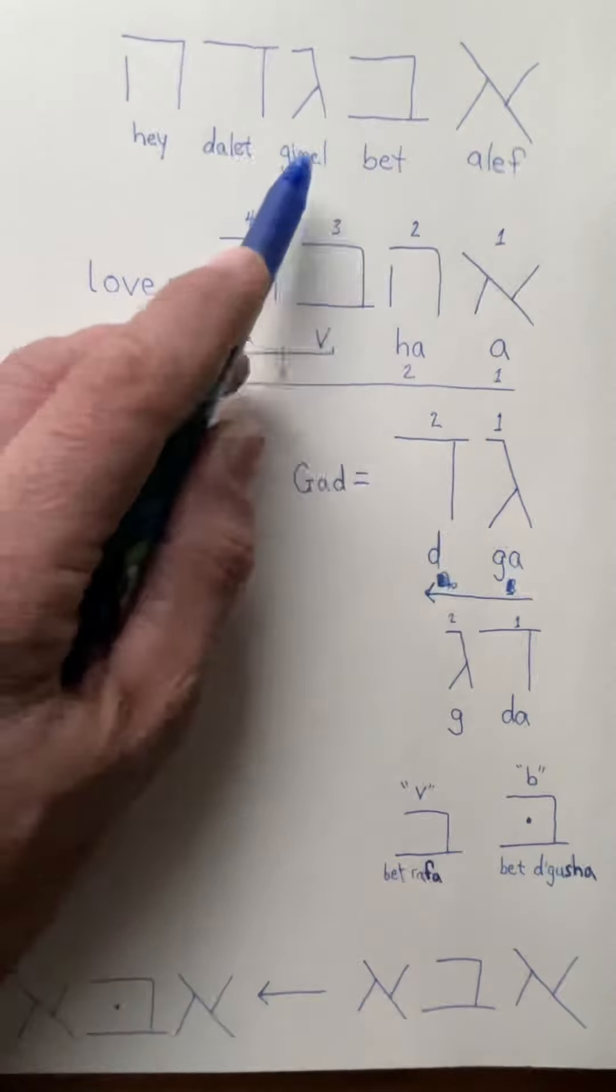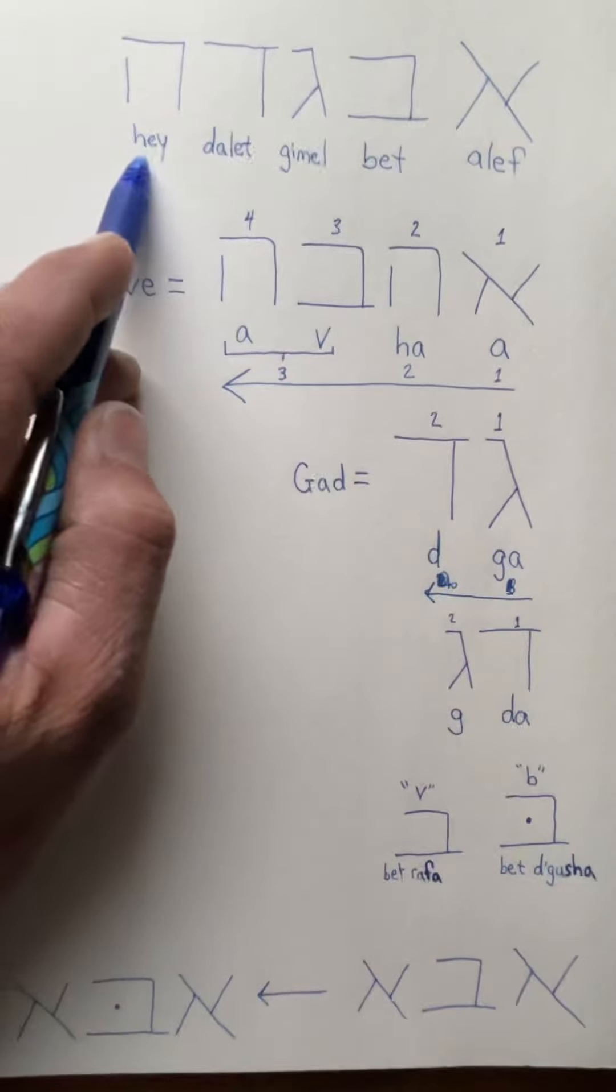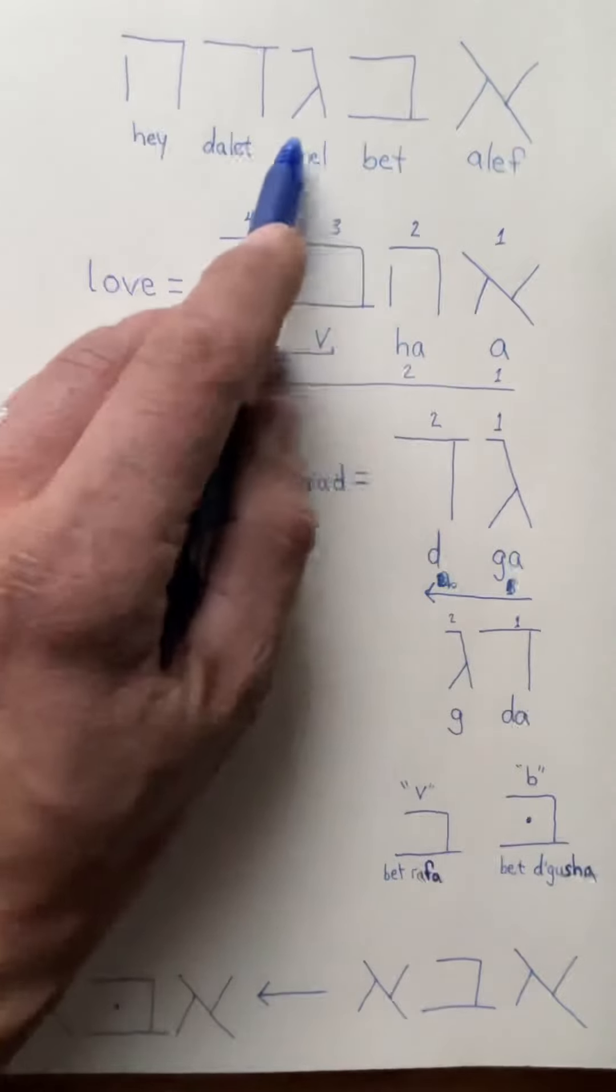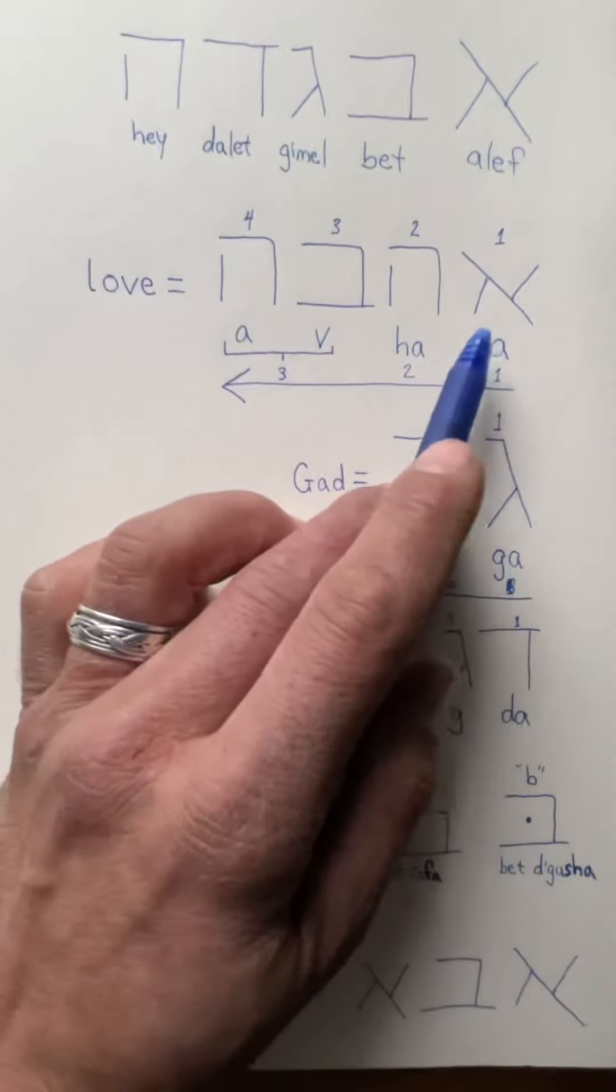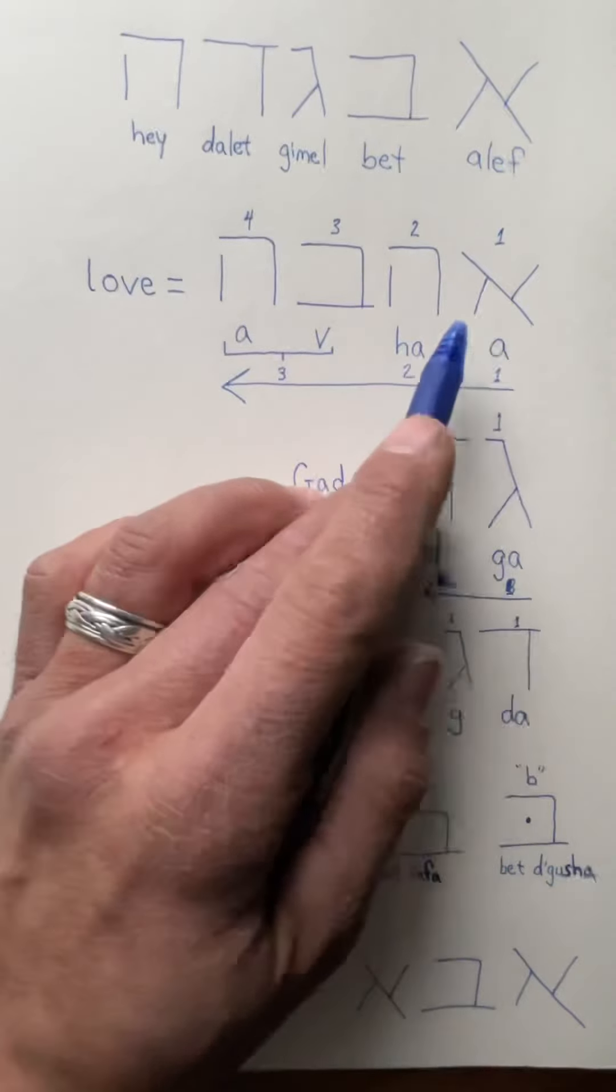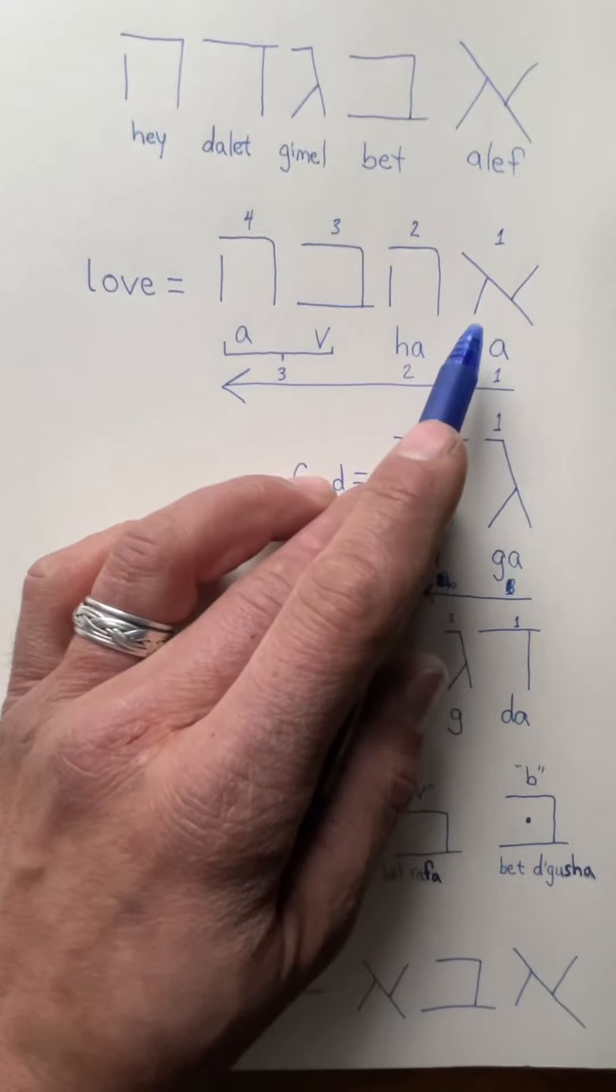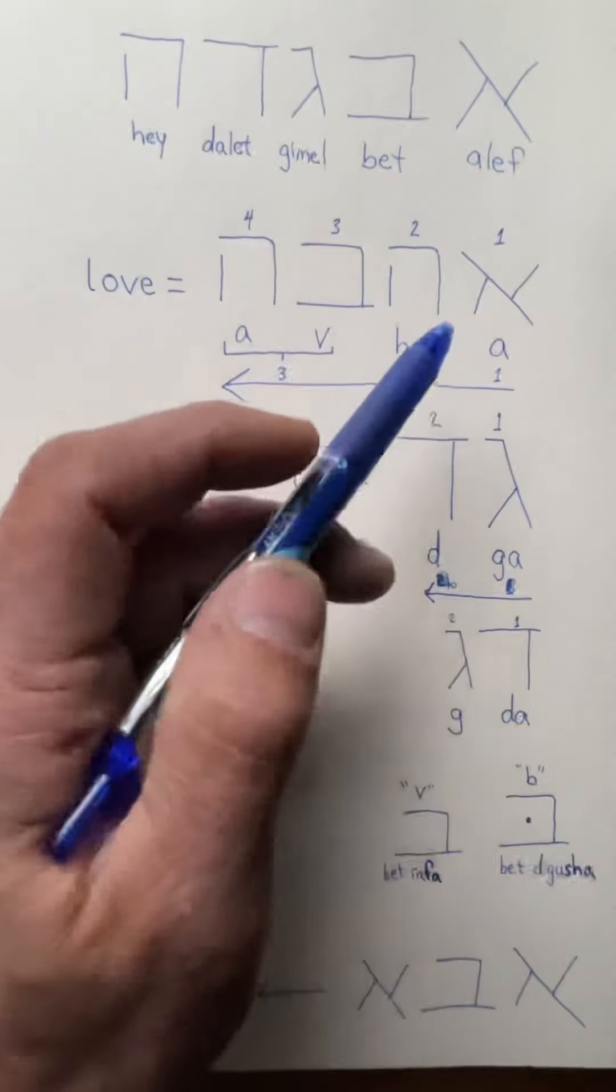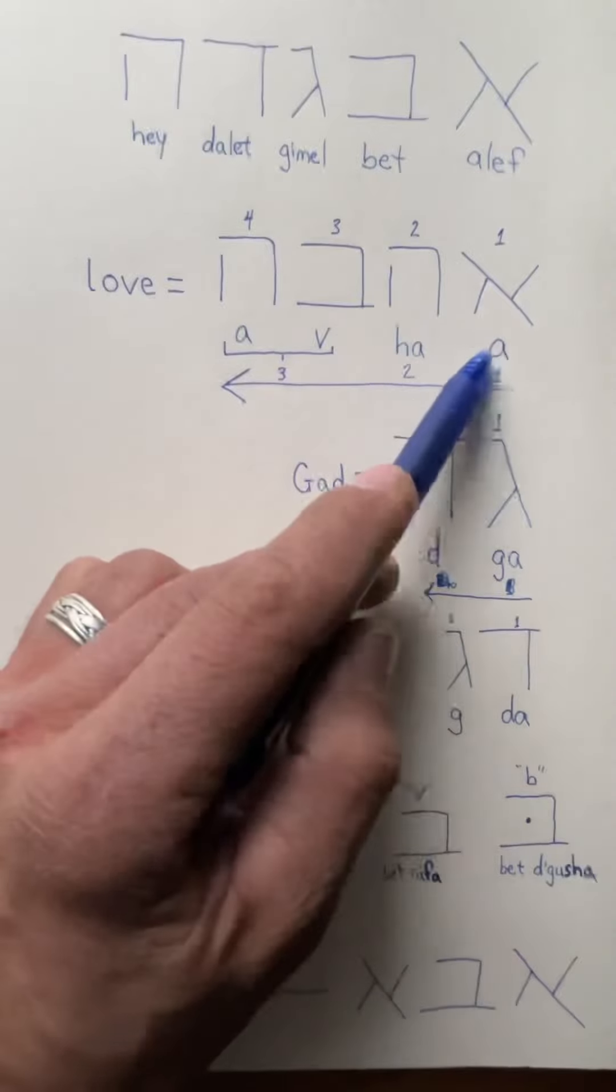Aleph, bet, gimel, dalet, hey. Here's the word ahava that I mentioned. It's a good first word to learn in Hebrew. It's also the first in the list of the nine attributes of the fruit of the spirit. So aleph in the word ahava is pronounced 'ah'.